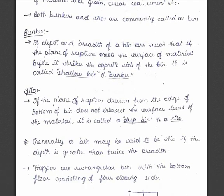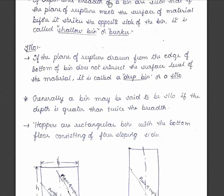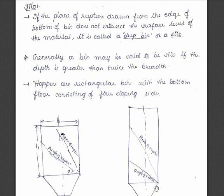A silo is defined as a deep bin: if the plane of rupture drawn from the edge of the bottom of the bin does not intersect the surface level of the material, it is called a deep bin or silo. In other words, the plane of rupture meets the opposite wall before it reaches the top surface of the material. Generally, a bin may be classified as a silo if the depth is greater than twice the breadth.